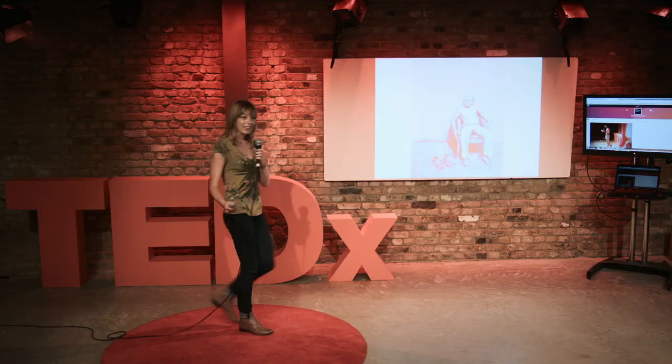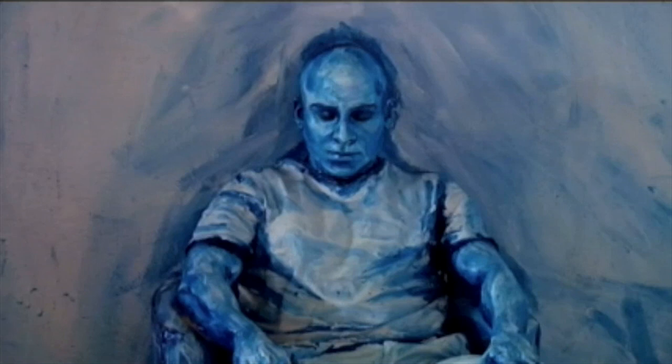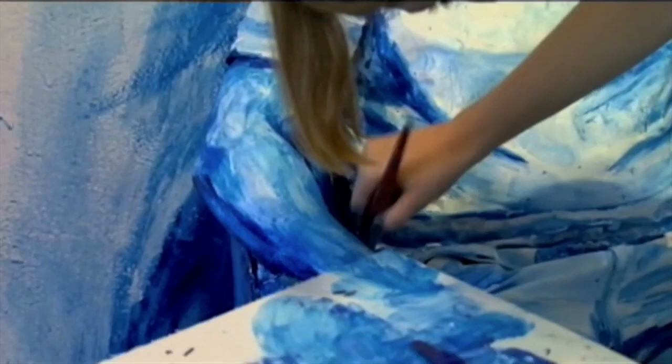If you saw this picture in a gallery, you might walk by it and go, all right, cool. And if you took a closer look, you might say, all right, what's the big deal? But there is something very different about this painting, and that's that it wasn't painted on canvas. It was actually painted directly on top of the man. I skip the canvas altogether, and I create my painting directly on top of whatever it is I want to paint a picture of.